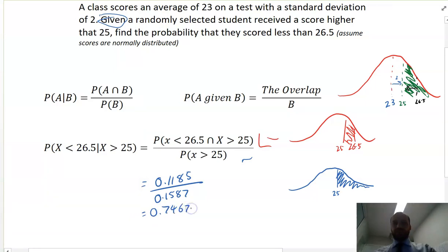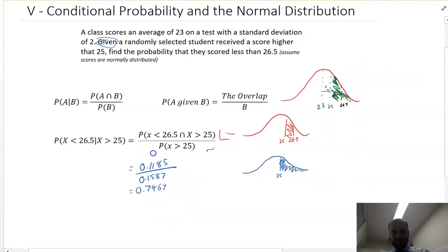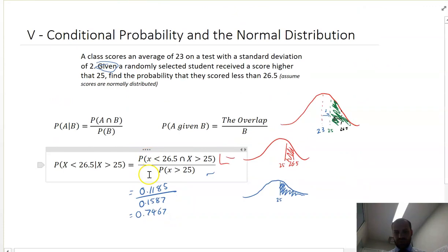Okay. So don't forget what that was. That was, given the student has already told me that they scored more than 25, the probability that they scored less than 26.5 is 74.67% or 0.7467. What we've done here is something called conditional probability with the normal distribution.